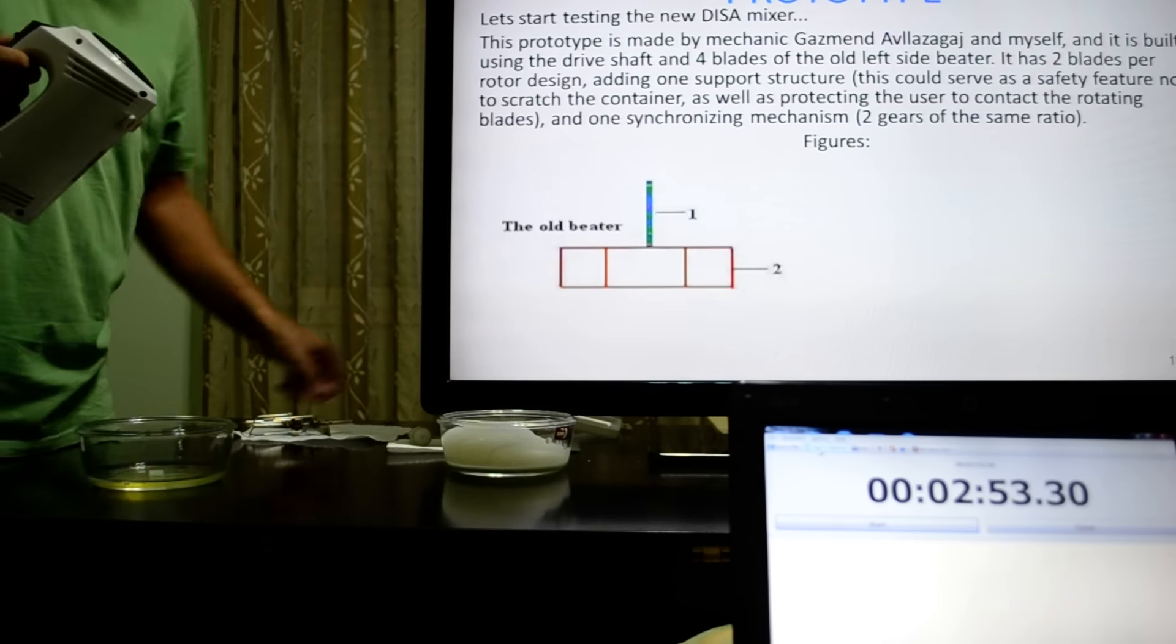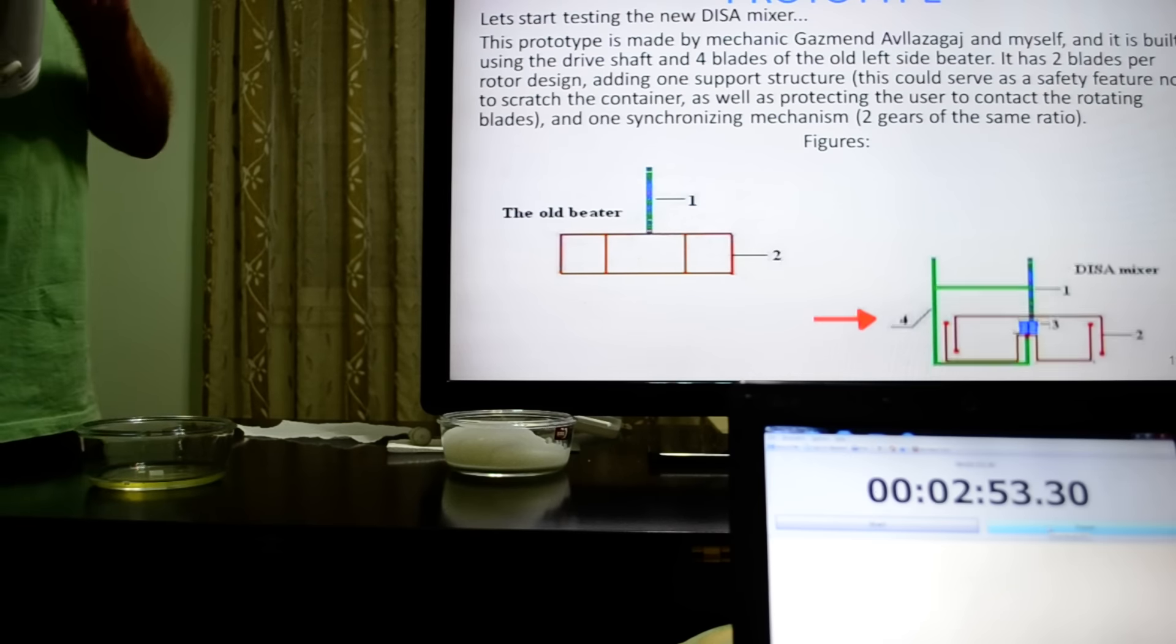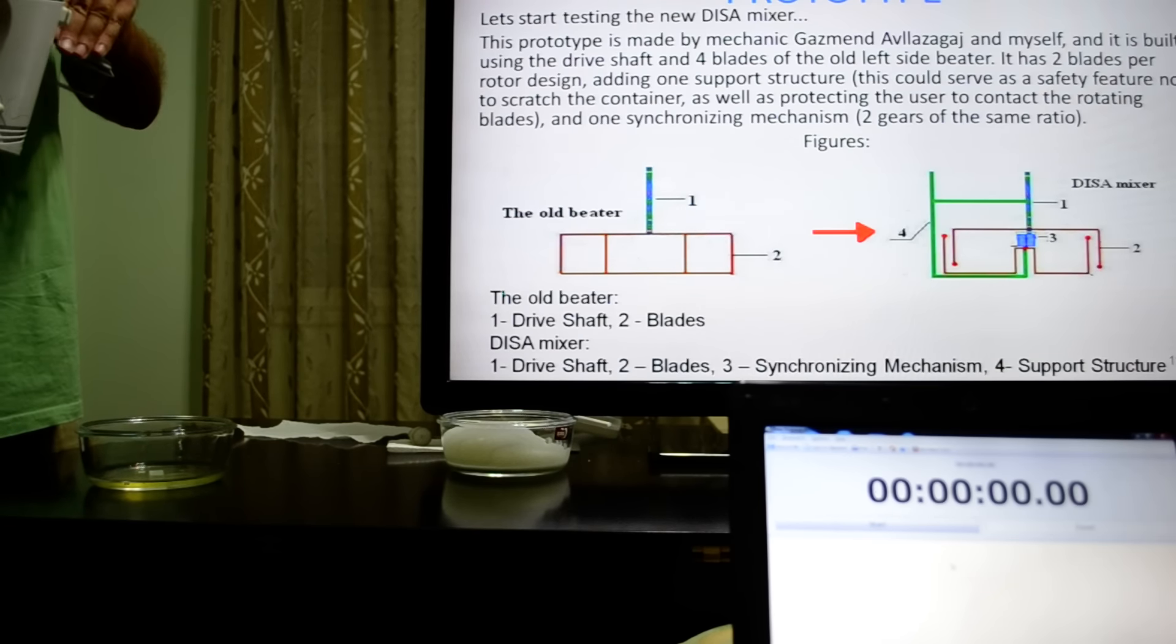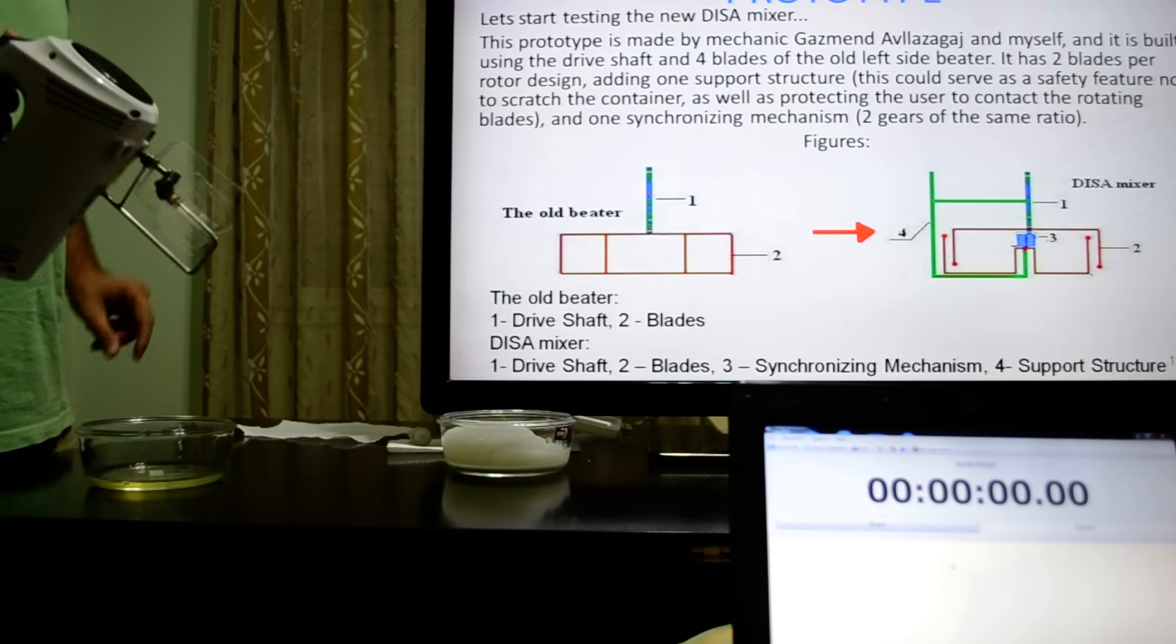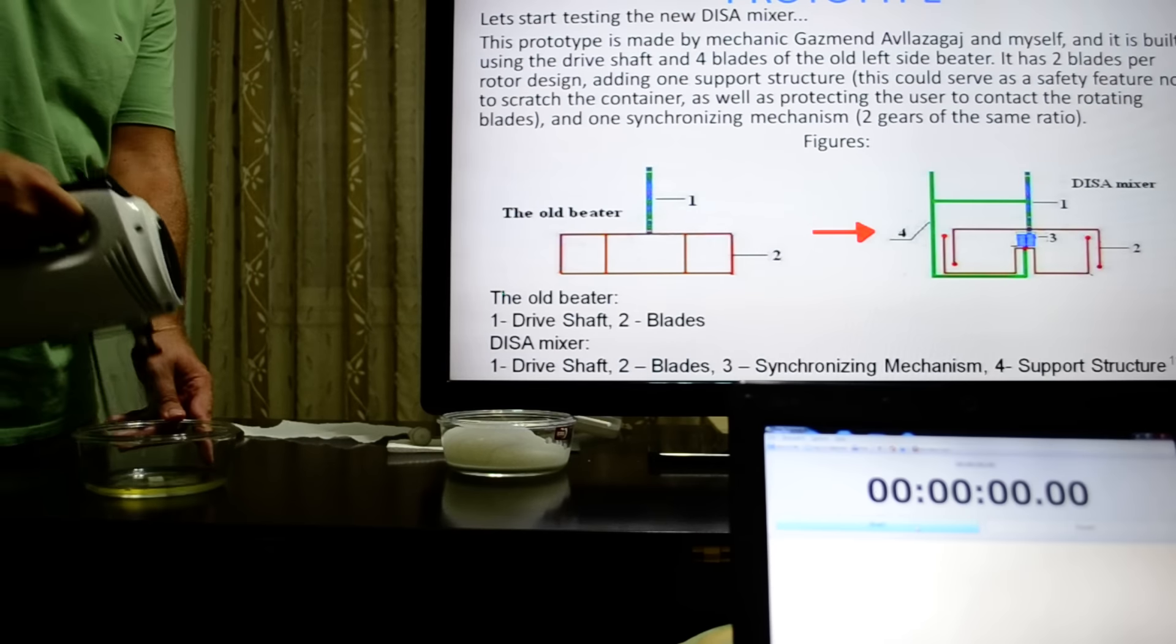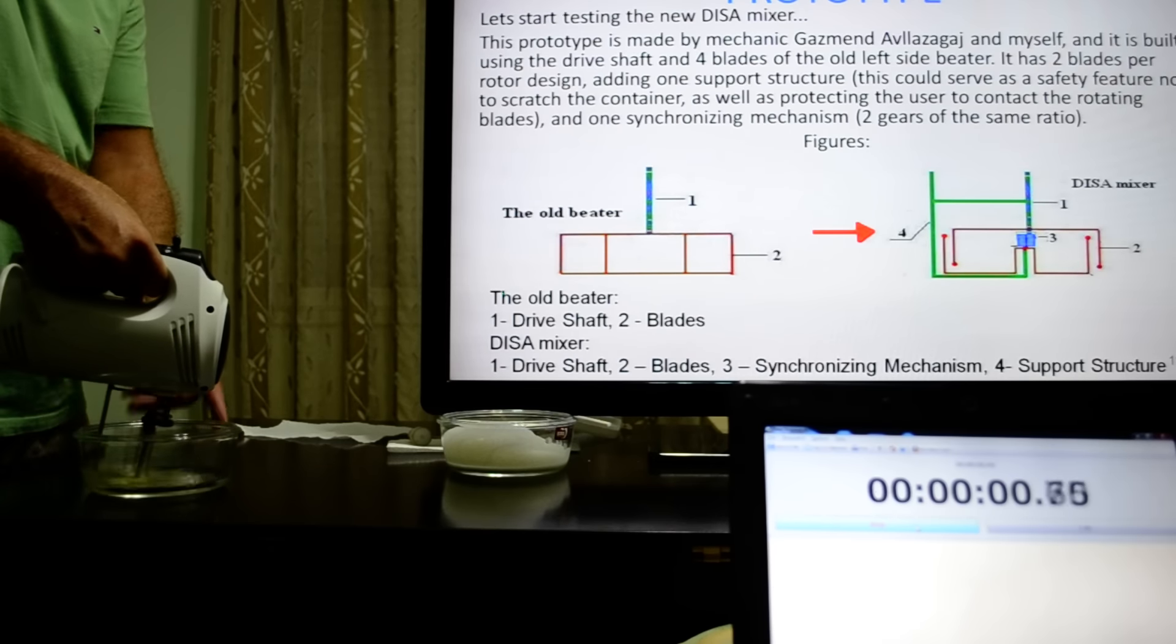Now, let's start testing the new DISA mixer. This prototype is made by mechanic Azman, a nice guy, and myself, and is built using the drive shaft and four blades of the old left side beater. It has two blades per rotor design, adding one support structure and one synchronizing mechanism.